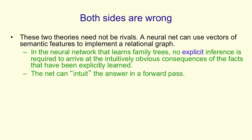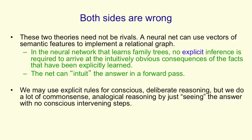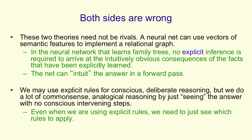There are no intervening conscious steps, but nevertheless there's a lot of computation going on in the interactions of neurons. So we may use explicit rules for conscious deliberate reasoning, but a lot of our common sense reasoning — particularly analogical reasoning — works by just seeing the answer with no conscious intervening steps. And even when we do conscious reasoning, we have to have some way of just seeing which rules apply in order to avoid an infinite regress.